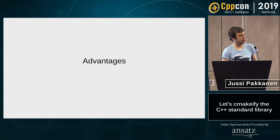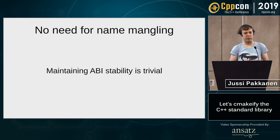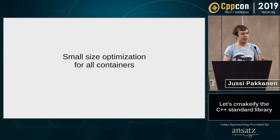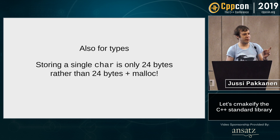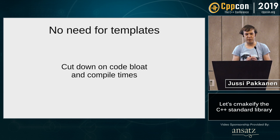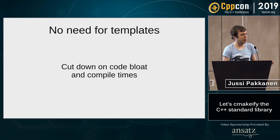And there are other advantages as well. You don't need name-mangling, because there's only one type. ABI stability is trivial — you don't have to do anything at all. You get the small size optimization for all containers, because there is only one container. And even better, you get it for types. So if you have one single character, it only takes 23 bytes to store it, as opposed to 24 and a malloc. Think about the savings. You don't need templates, because there is only one type. Templates become unnecessary — you just write your algorithm for string and it works for everything. And this cuts down on compilation time. There's no code bloat. There's only one function for any piece of functionality.